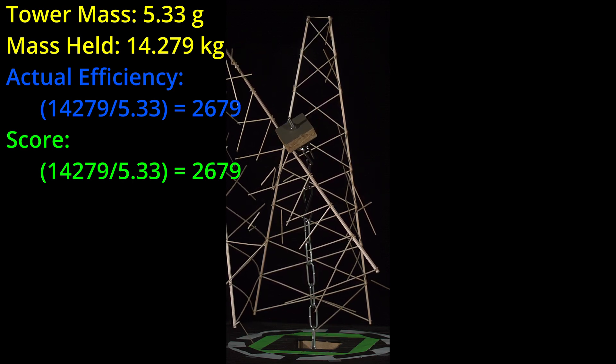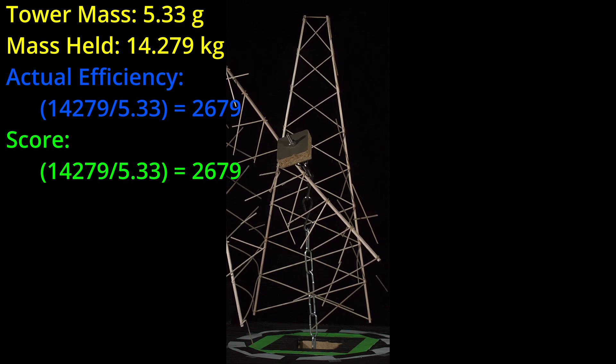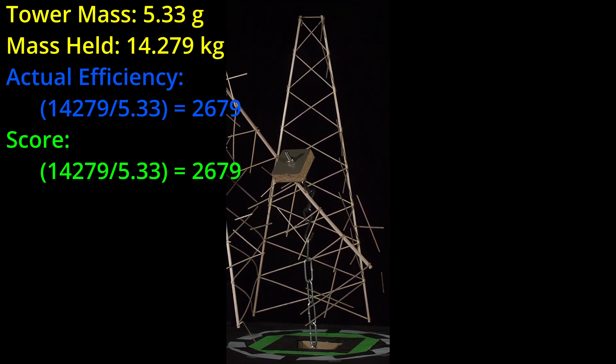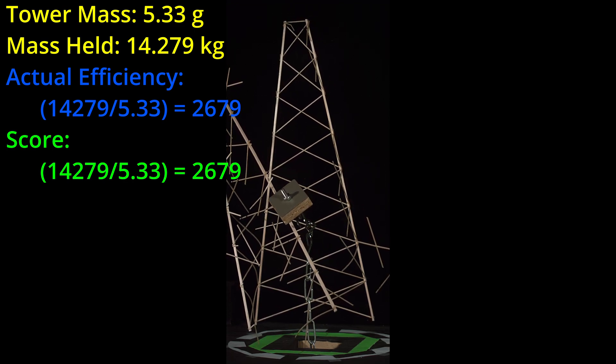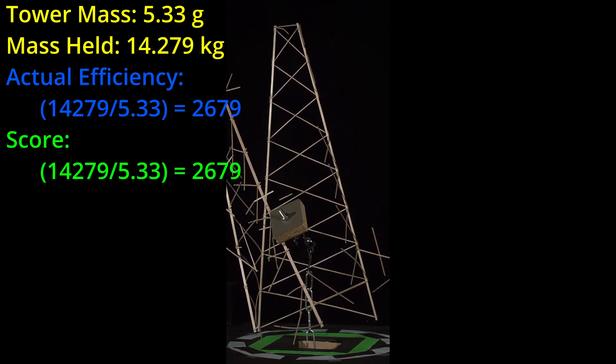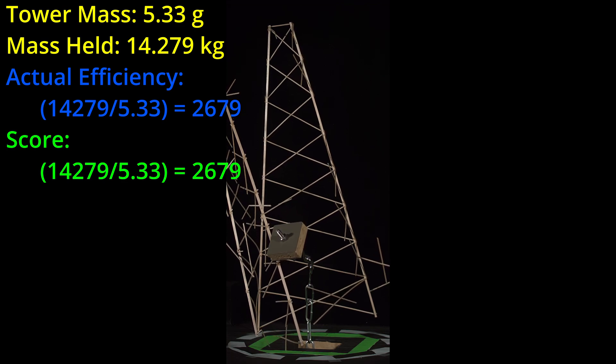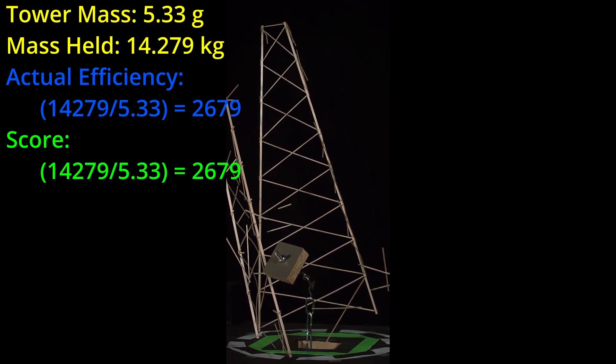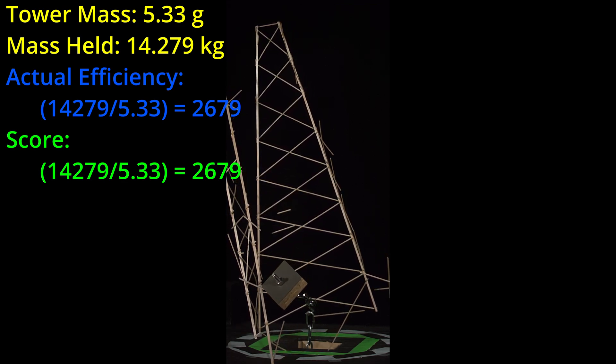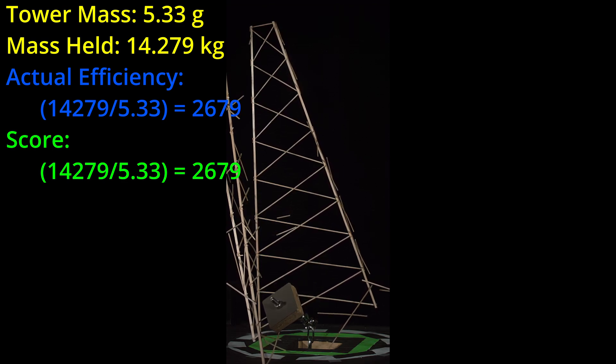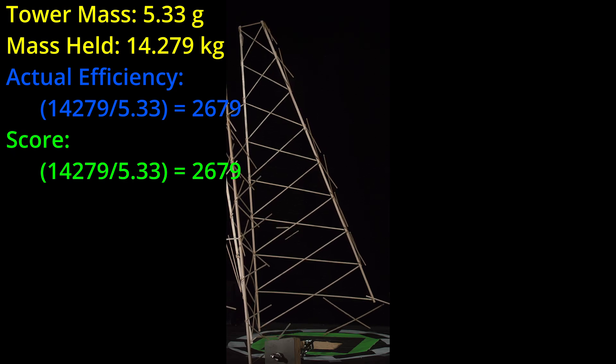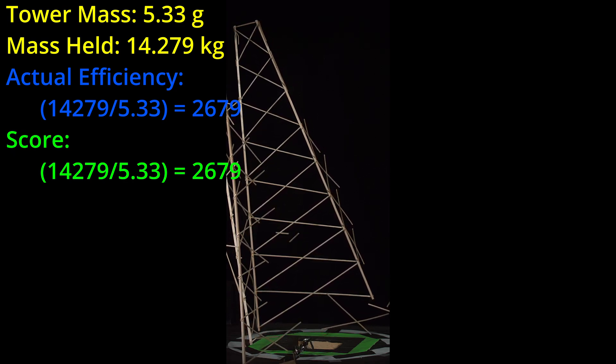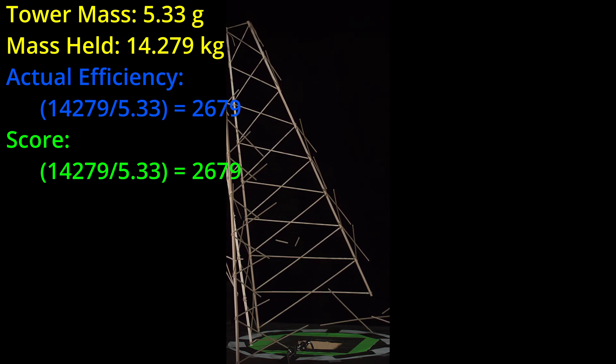If we take this tower's actual efficiency of 2679 and imagine optimizing that at exactly 15 kilograms, that would mean a 5.6 gram tower. At 5.6 grams, a bonus tower holding the entire load would score 3571 and be almost identical to our benchmark tower's actual efficiency. My early conclusion is that a bonus tower can at least be on par with the non-bonus version, but it isn't obviously better.